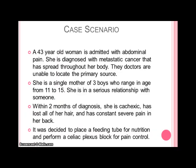The case scenario we are going to use today is of a 43-year-old woman who is admitted with abdominal pain. She is diagnosed with metastatic cancer that is spread throughout her body, and the doctors are unable to locate the primary source. She is a single mother of three boys who range in age from 11 to 15 and is in a serious relationship. Within two months of her diagnosis, she is cachectic, has lost all of her hair, and has constant severe pain in her back. It was decided to place a feeding tube for nutrition and to perform a celiac plexus block for pain control.